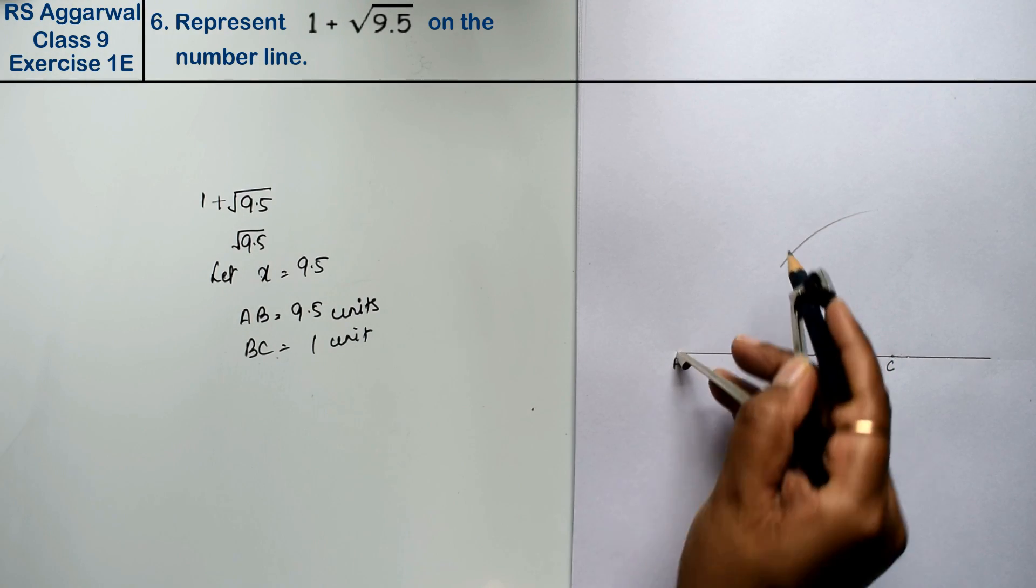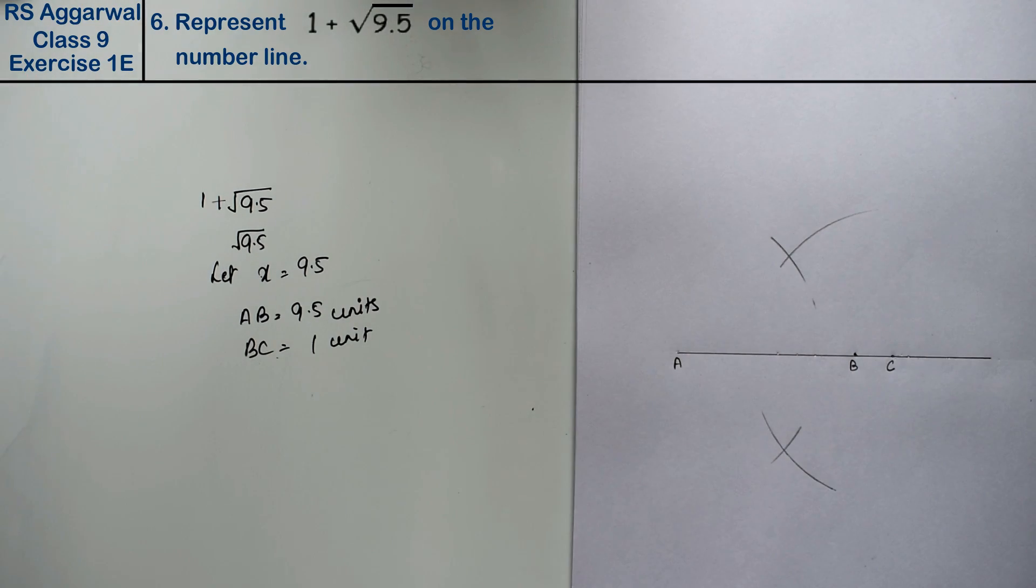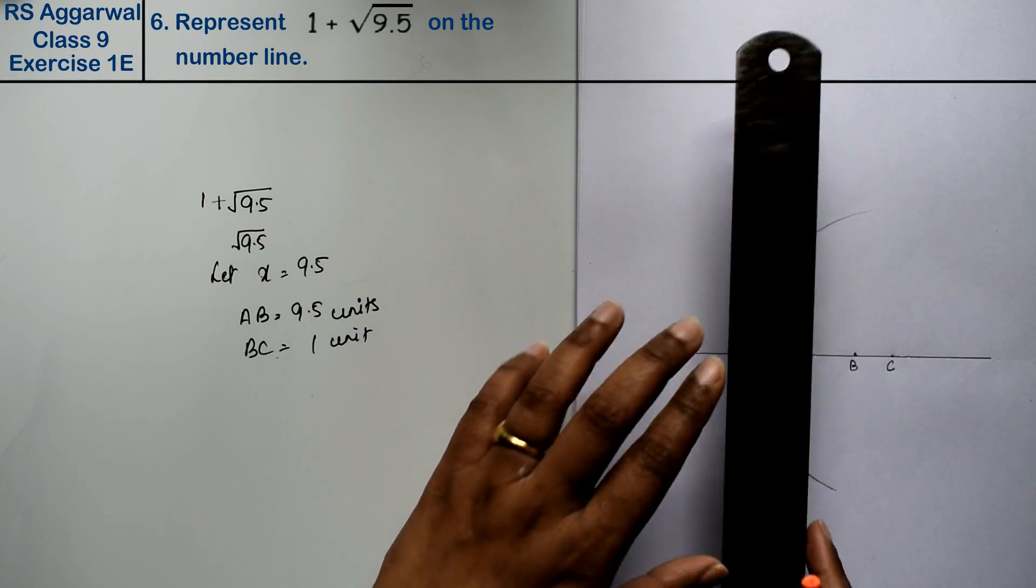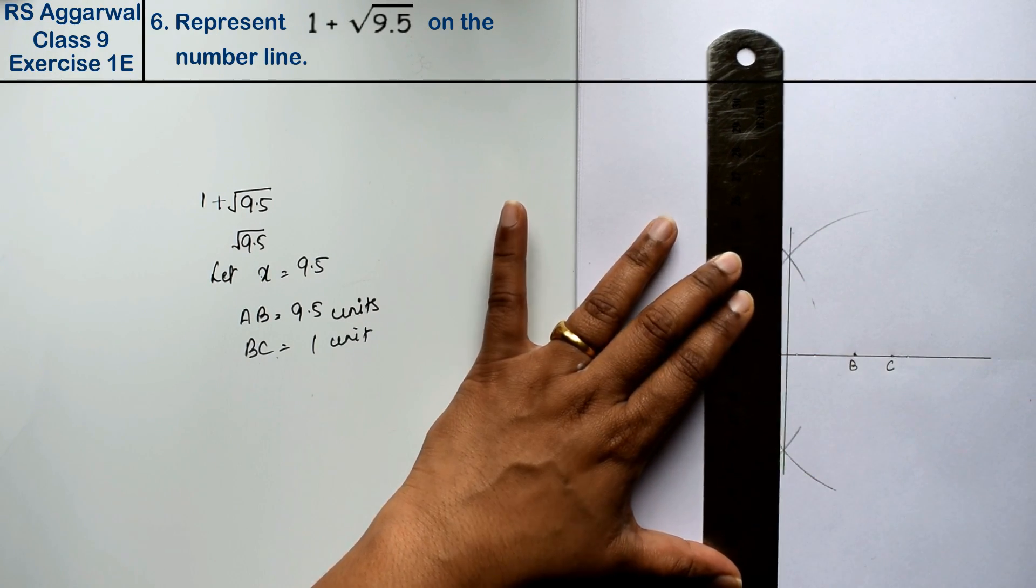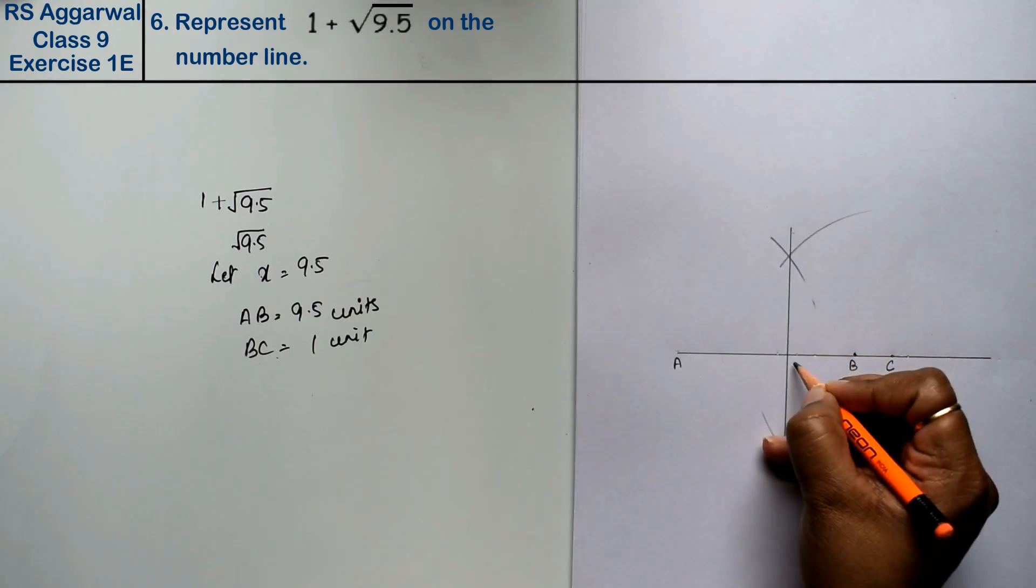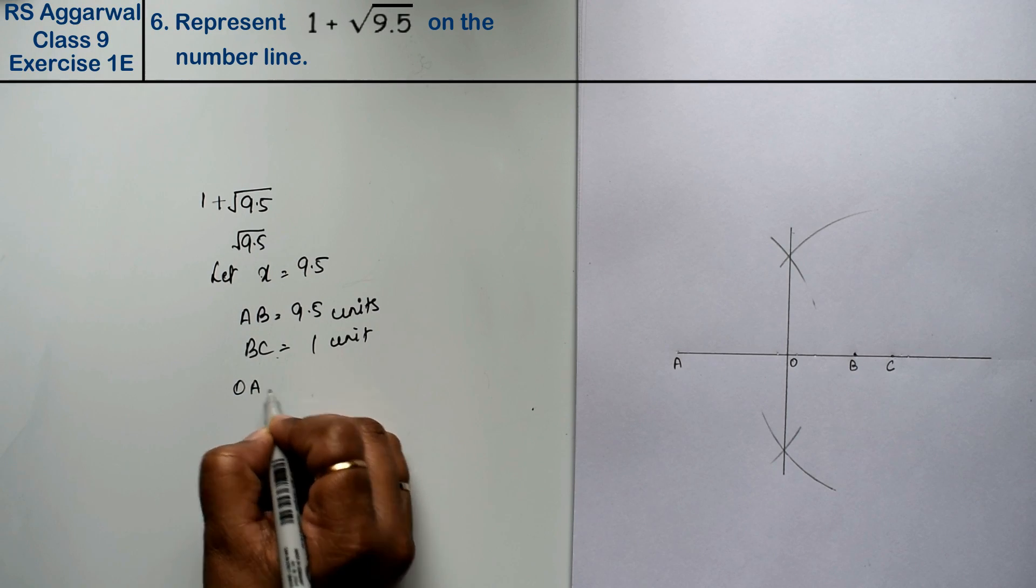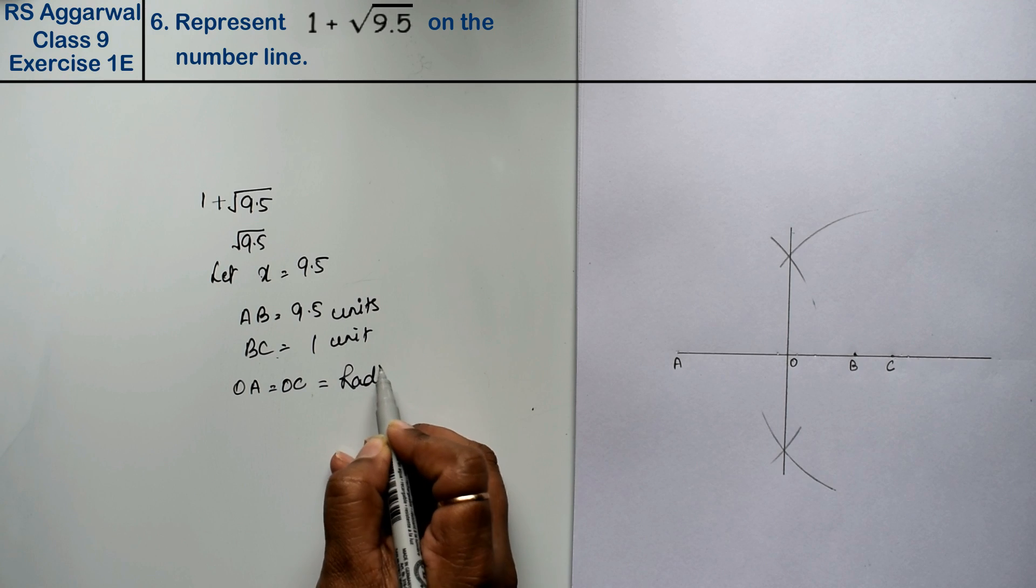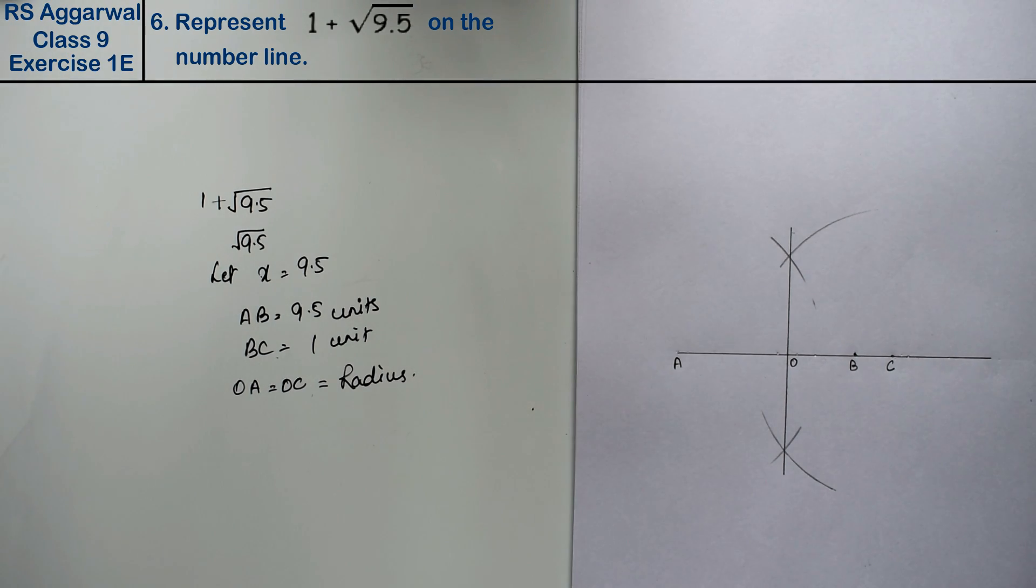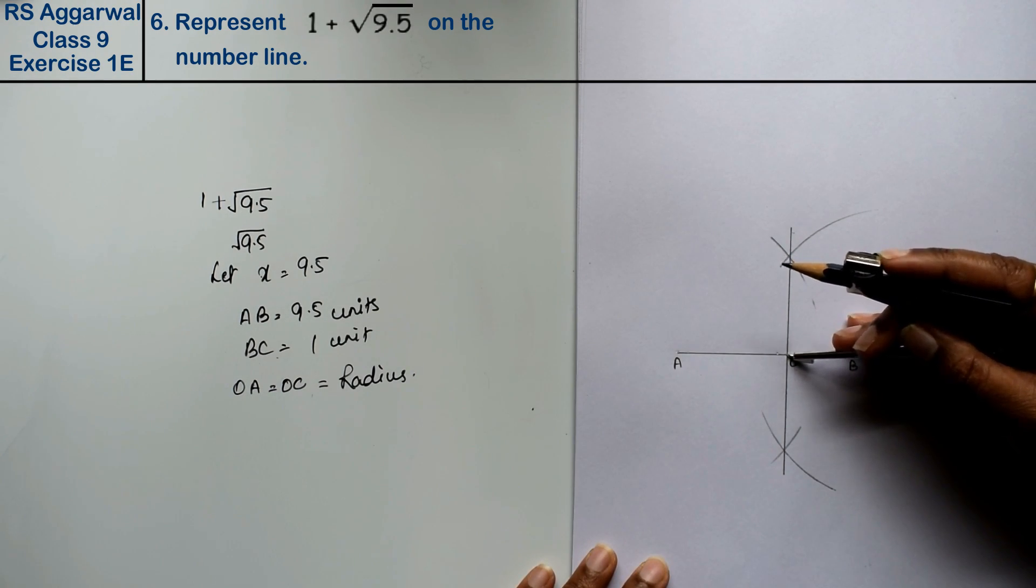From the same point on AC, draw one arc here and one arc here. Join these points. This point is O. Now OA equals to OC. Taking this as radius, we will draw a semicircle. Take OA as the radius.